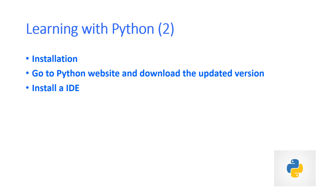First, we need to know how to install Python. In today's lecture I am not going to show you how to install it, but I will suggest some videos. You should go to the Python website and download the most updated version, because Python updates itself frequently as many programmers are working on its development. Install Python on your computer, then install an IDE so that we can write code. Otherwise, you can use the shell command prompt to write your shell script.